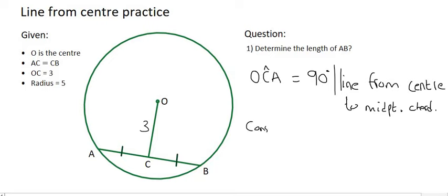What we could then do is construct line OA. First, we could say that OA is 5, and that's because that was given to us as the radius.